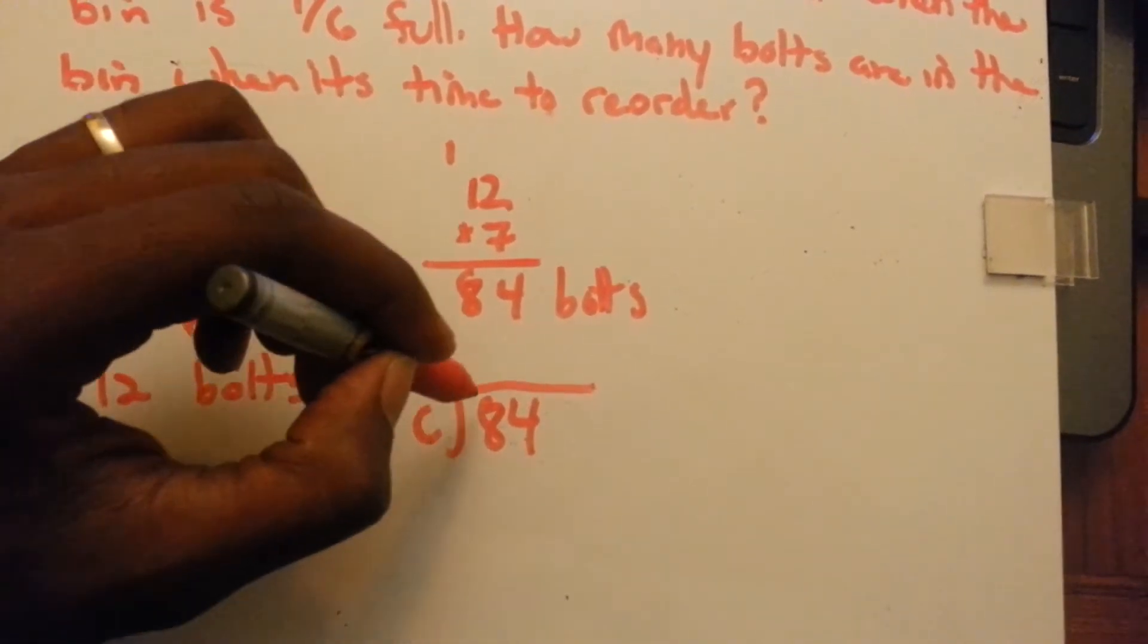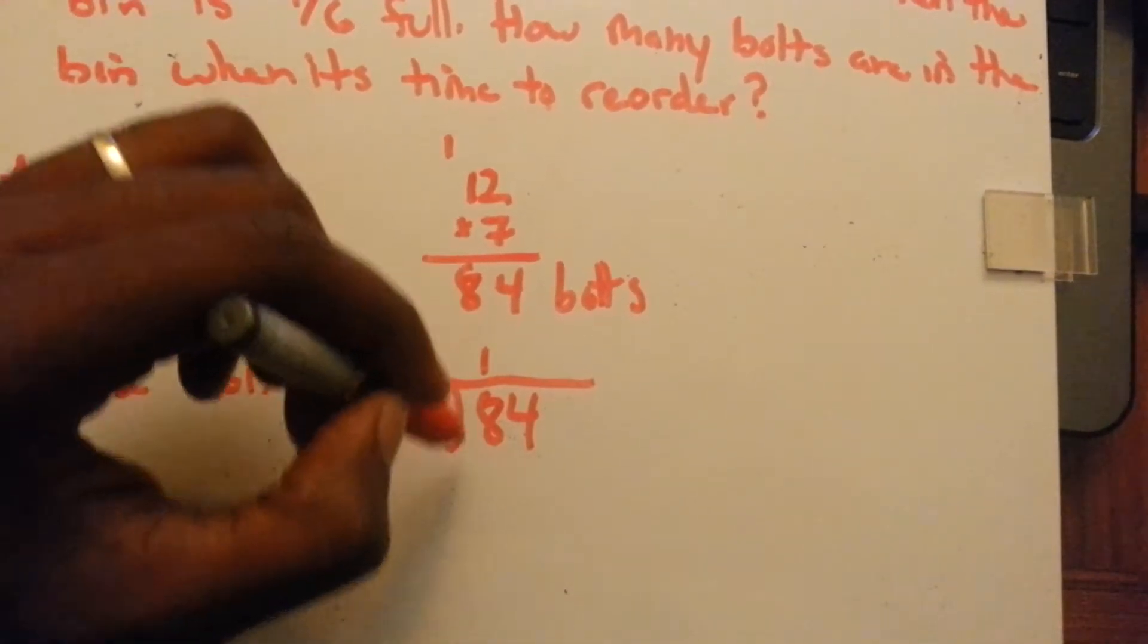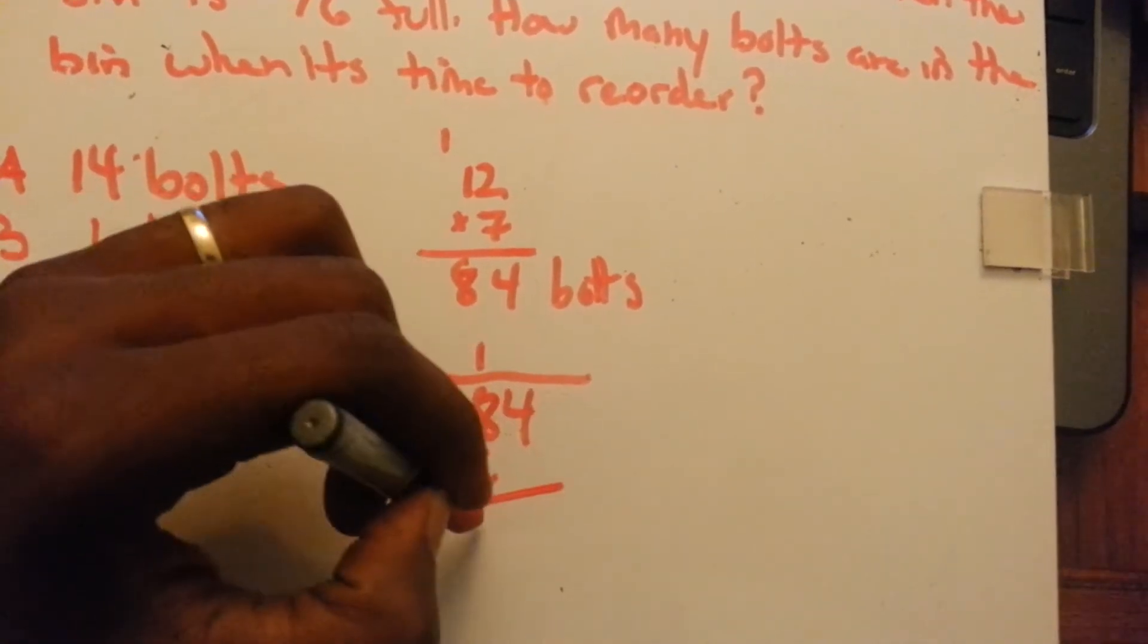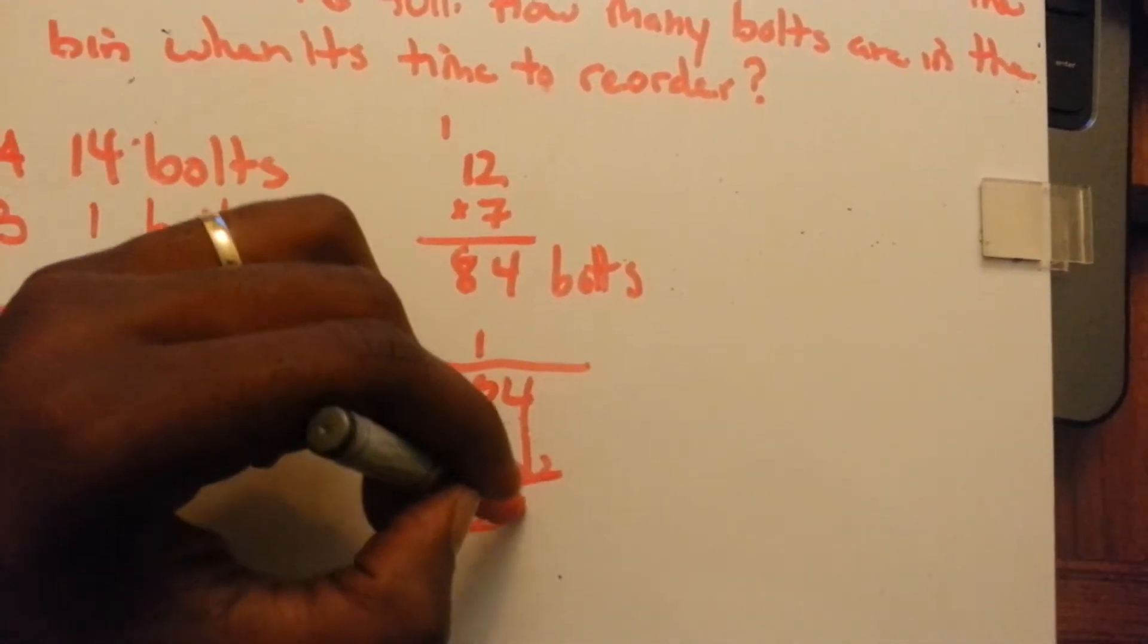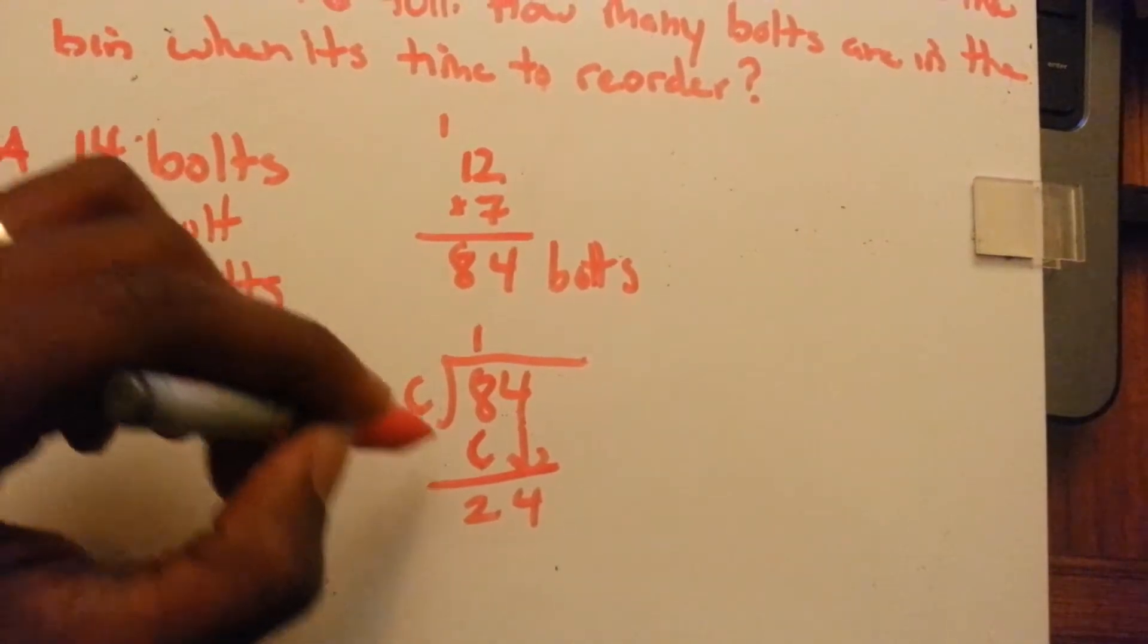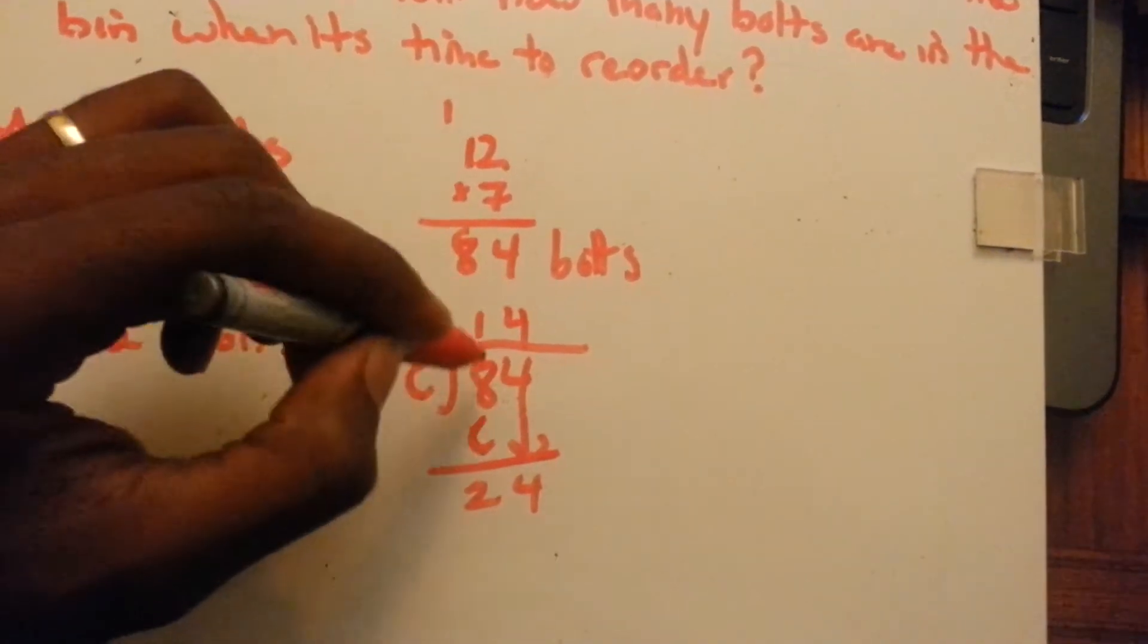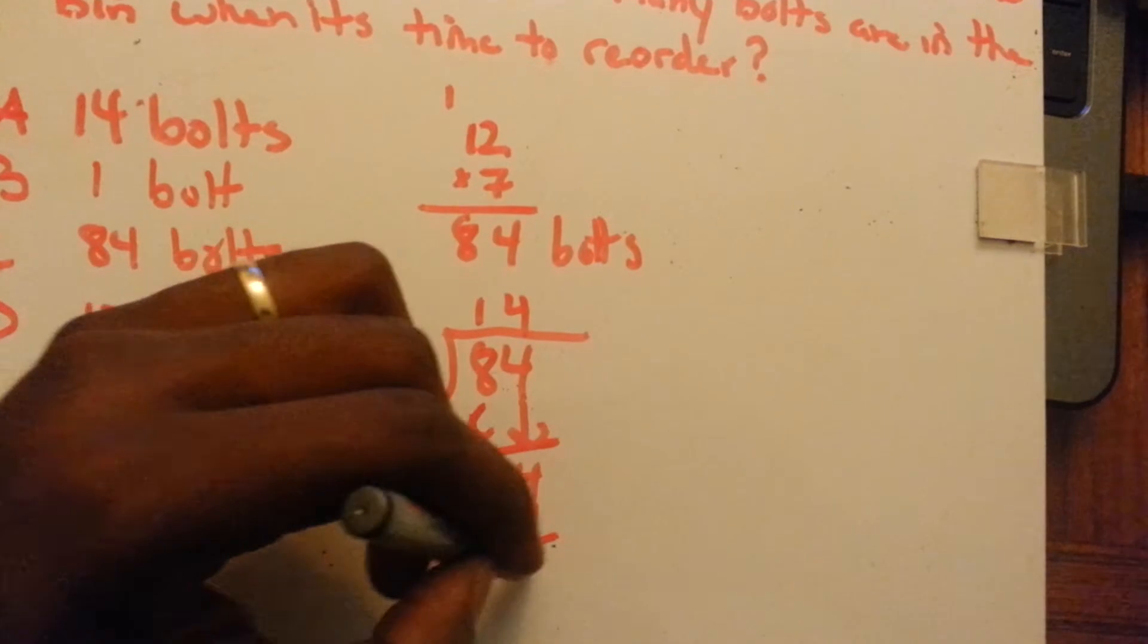So, six divided by eight is one, six, two left over, bring down the four. Twenty-four, twenty-four, six goes into twenty-four four times, twenty-four, no remainders.